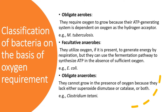On the basis of their oxygen requirement, bacteria are classified into three categories. First, obligate aerobes require oxygen to grow because their ATP-generating system is dependent on oxygen as the hydrogen acceptor; an example is Mycobacterium tuberculosis. Second, facultative anaerobes utilize oxygen if present to generate energy by respiration, but can also use the fermentation pathway to synthesize ATP in the absence of sufficient oxygen; an example is E. coli. Third, obligate anaerobes cannot grow in the presence of oxygen because they lack either superoxide dismutase or catalase, or both; an example is Clostridium tetani.